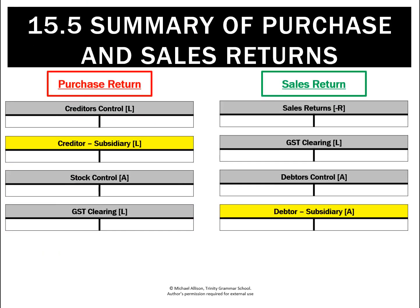The entries required for a purchase return — we had four. We had a debit to creditors and the creditor subsidiary account, and that was offset by two entries to stock and GST clearing.